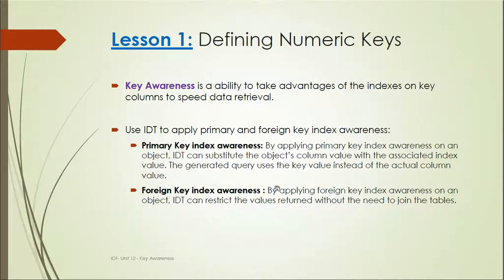We need to understand primary key index awareness and foreign key index awareness. Primary key index awareness means we apply it on objects, and IDT can substitute the object's column value with the associated index value. So instead of applying a column value directly, it references the index value, which speeds up data retrieval.